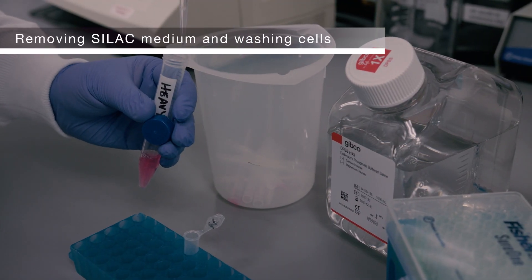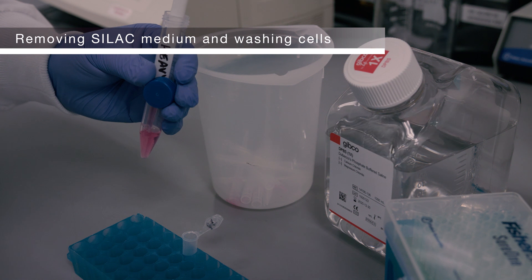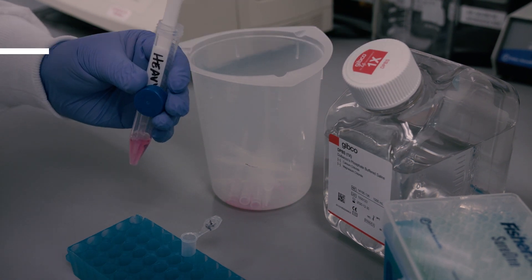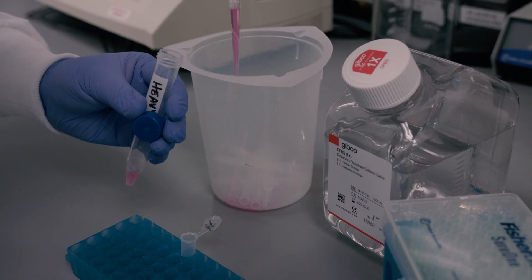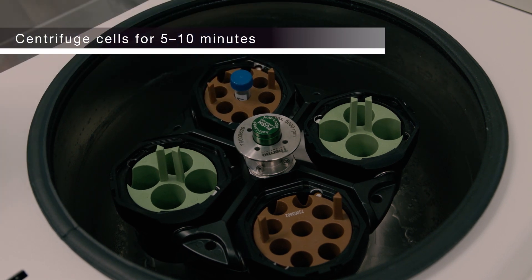Prior to mass spec analysis, the cells should be washed twice using 5 cell pellet volumes of PBS and centrifuge for 5 to 10 minutes at 500 times G to pellet the cells and remove the SILAC medium.